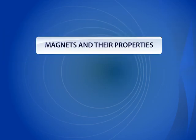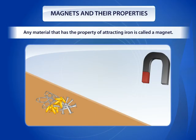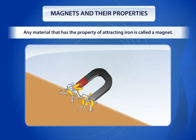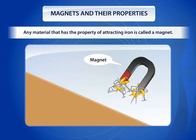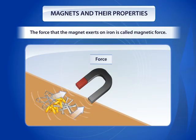Any material that has the property of attracting iron is called a magnet. The force that the magnet exerts on iron is called magnetic force.